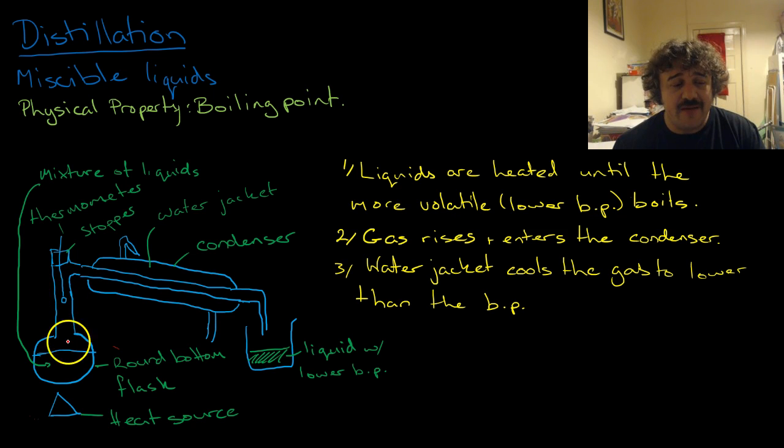As it rises up this way, it's got nowhere to go, so it's forced down here because it's expanding. The water jacket here cools it off, turns it back into a liquid, condenses it, and cools it to lower than the boiling point.